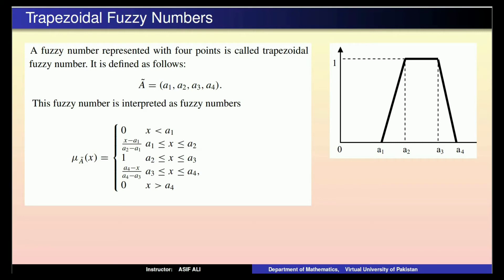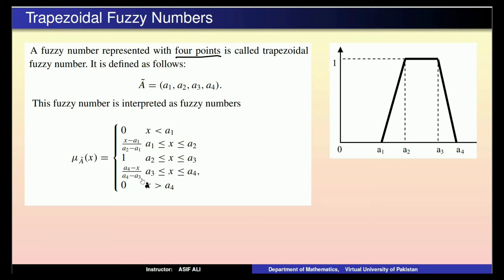Dear students, so trapezoidal fuzzy numbers کی definition دیکھتے ہیں۔ A fuzzy number represented with four points is called a trapezoidal fuzzy number. It is written as A tilde = (a1, a2, a3, a4). Its membership function is: 0 when x < a1; (x − a1)/(a2 − a1) when a1 ≤ x ≤ a2; 1 when a2 ≤ x ≤ a3; (a4 − x)/(a4 − a3) when a3 ≤ x ≤ a4; and 0 when x > a4.